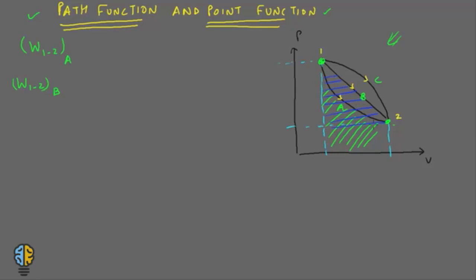You can see the areas are different. If I have to find out the work done in going from 1 to 2 via path C, it will be a totally different value because the area under the graph would be different. This tells us that the value of work done does not depend upon the initial state and the final state — since those are the same for all 3 paths. It depends upon the path that the process follows. For this reason, work is called a path function.